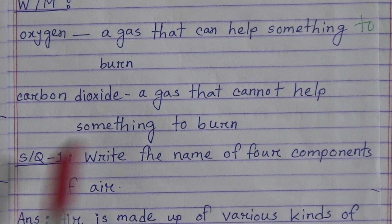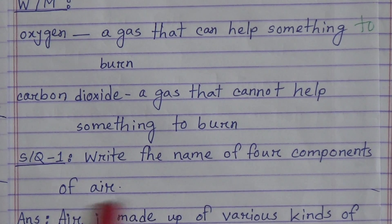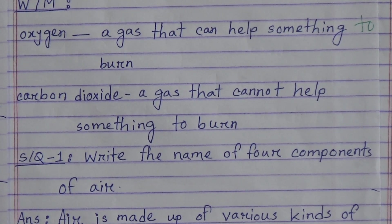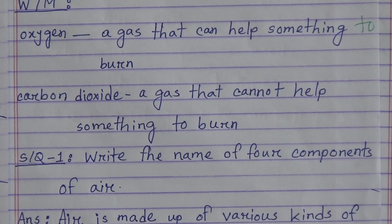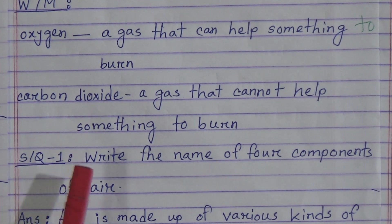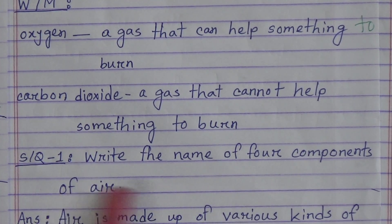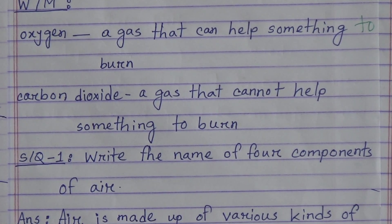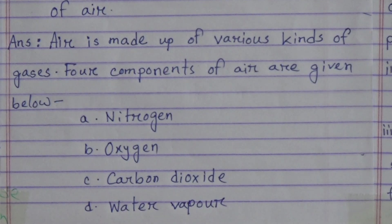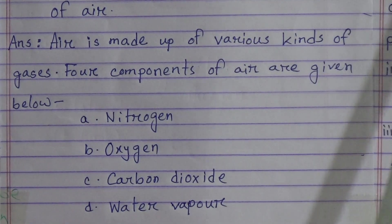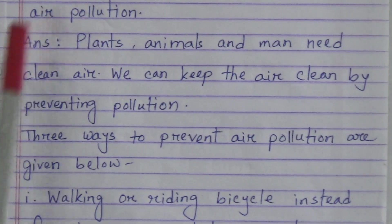Short question number one: write the name of four components of air. Answer: air is made up of various kinds of gases. The four components of air are: nitrogen, oxygen, carbon dioxide, and water vapor.